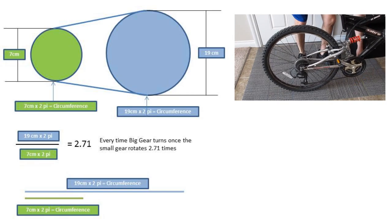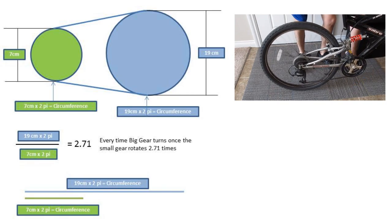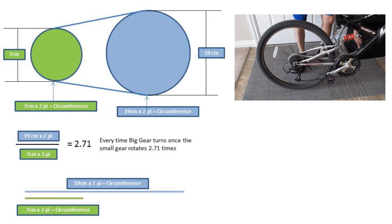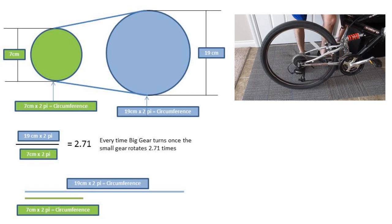To further cement this I have placed a graphic of both the gears' circumferences laid out flat. You will notice that the 7 cm gear circumference is much shorter than the 19 cm gear circumference.